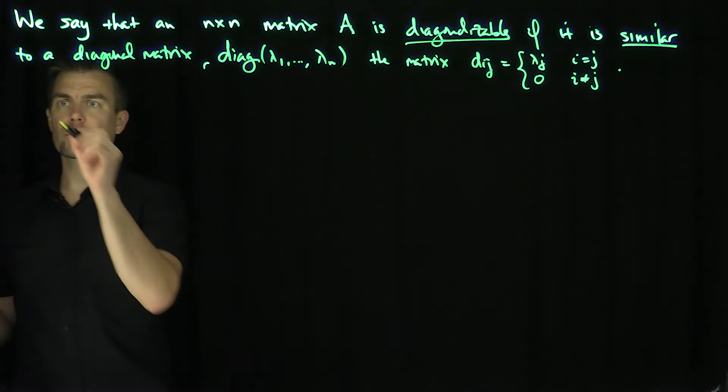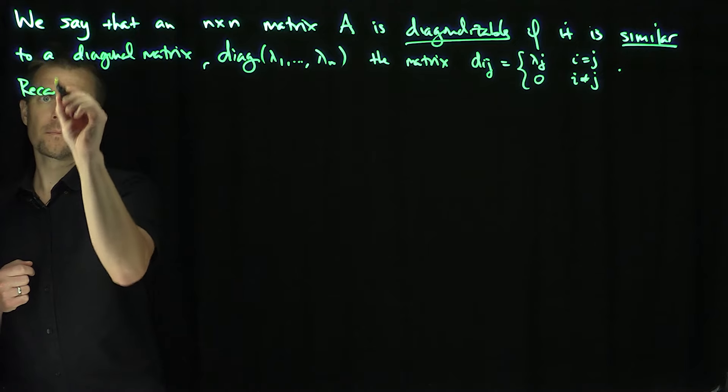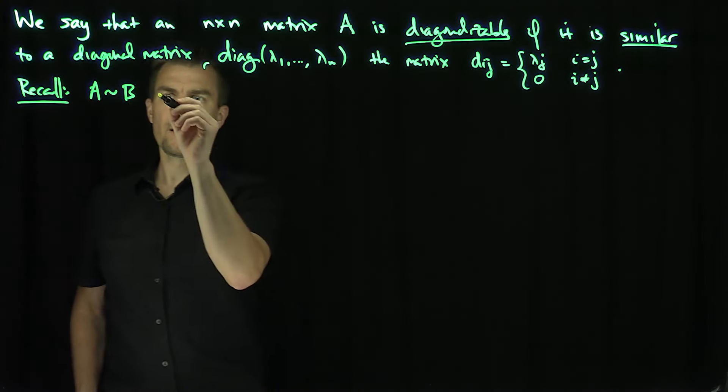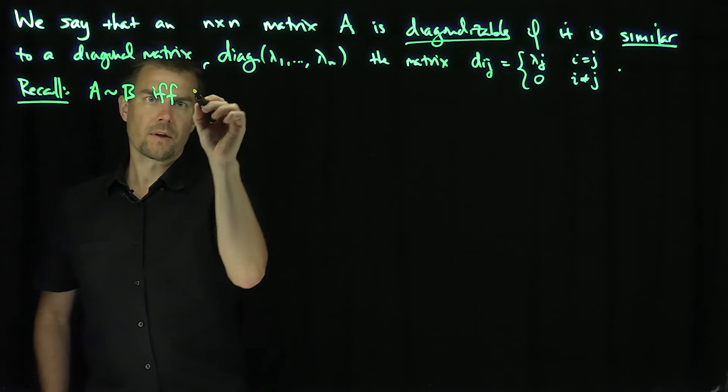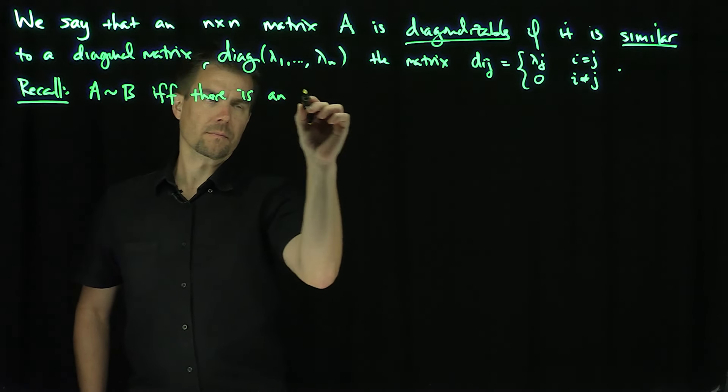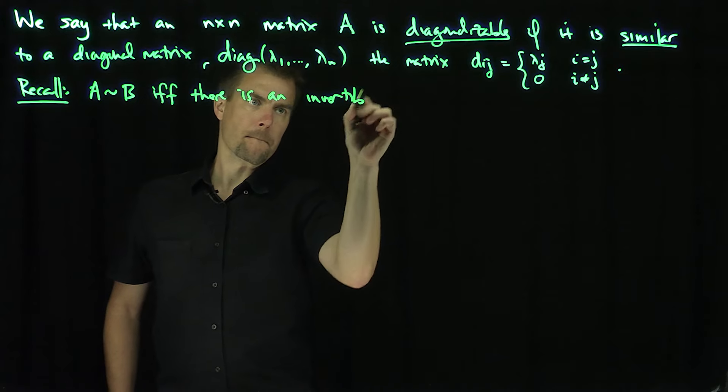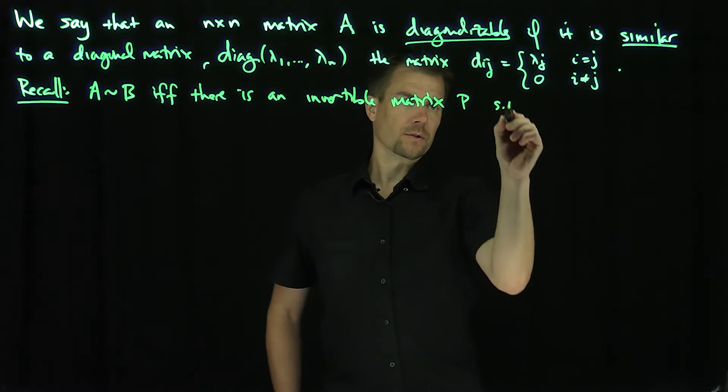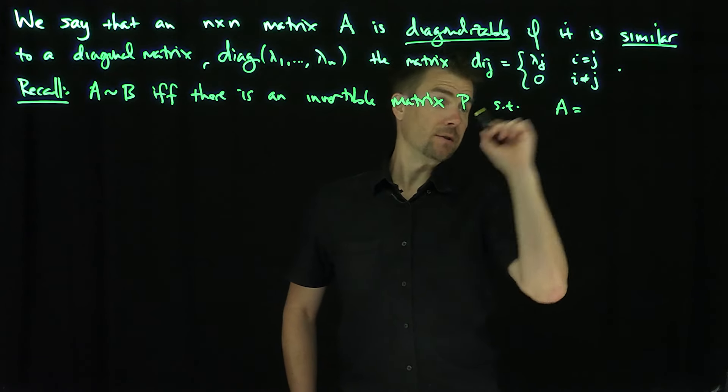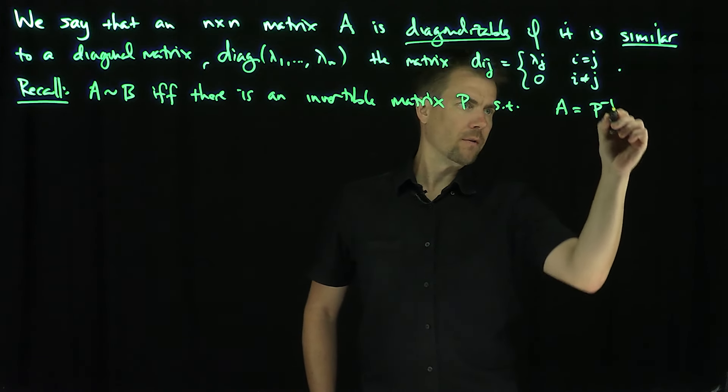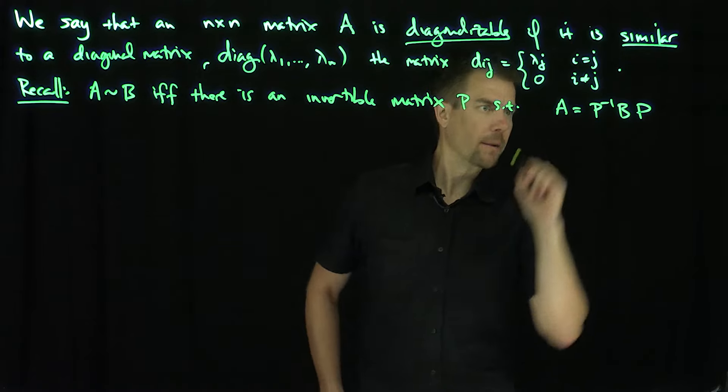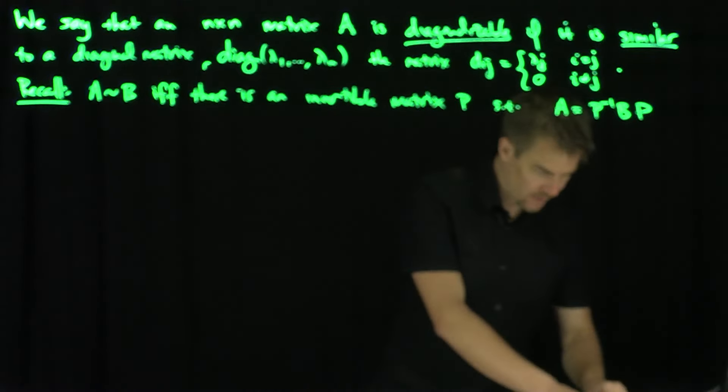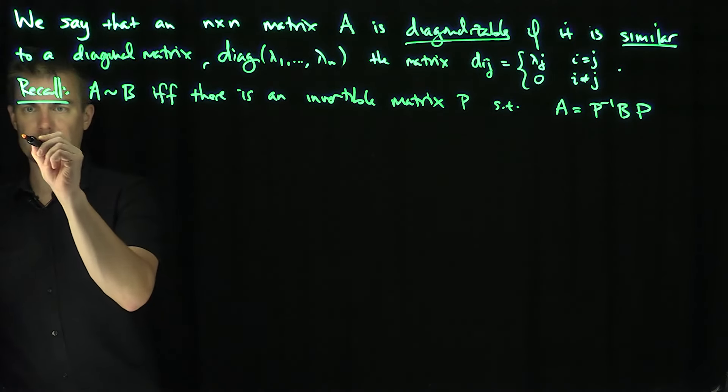Of course, let's recall what it means to be similar. Recall that A is similar to B if and only if there is an invertible matrix P such that A equals P⁻¹BP, like that. I'm going to state a theorem about these diagonalizable matrices. This is the main theorem about diagonalizability.